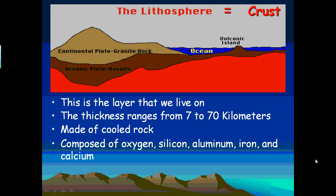The crust is made of cooled rock, composed of oxygen, silicon, aluminum, iron, and calcium.